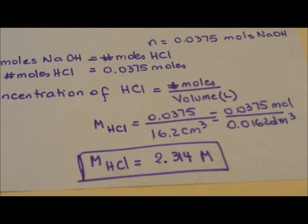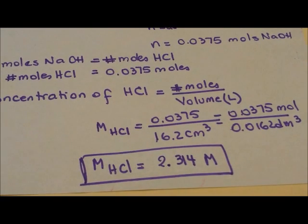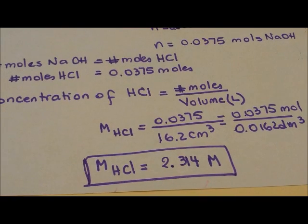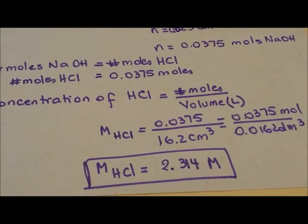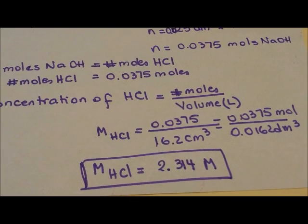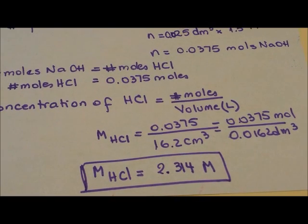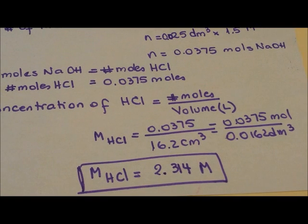The last step will be calculating the concentration of the hydrochloric acid. We have the number of moles, we have the volume in liters, and we can calculate the molarity and that gives us 2.31 molar of hydrochloric acid.